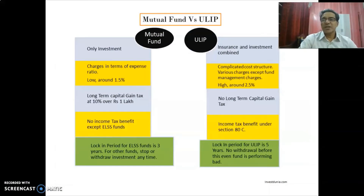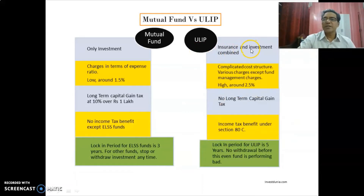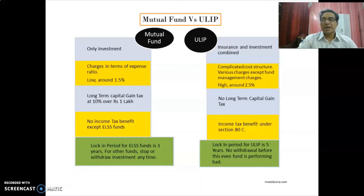ELSS is essentially a mutual fund with only an investment option, whereas ULIP is a Unit Linked Insurance Policy that combines insurance and investment. Traditional insurance products invest in government equities and returns are very negligible, so we won't compare those to mutual funds and ELSS.